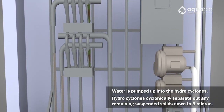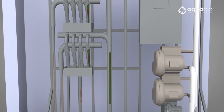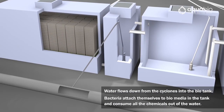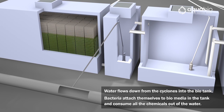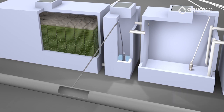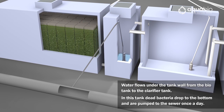Water flows down from the cyclones into the bio tank, where bacteria attach themselves to bio media in the tank and consume all the chemicals out of the water.